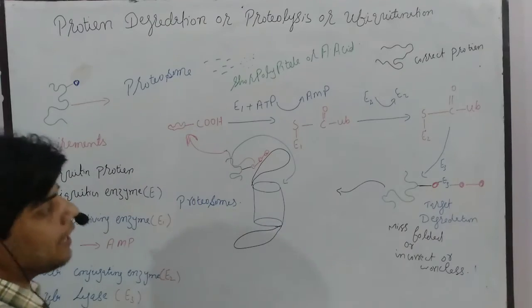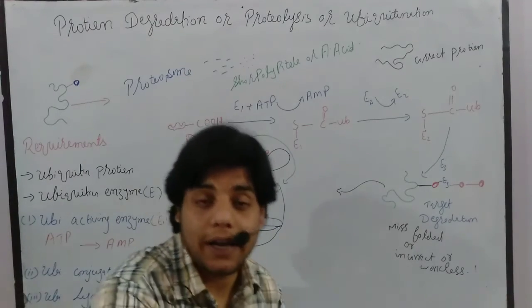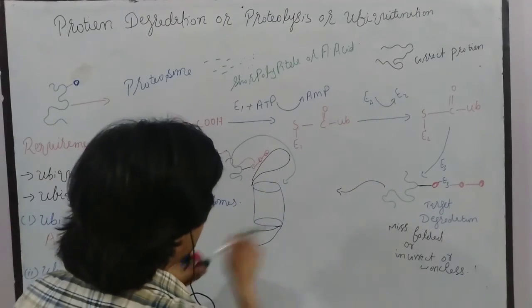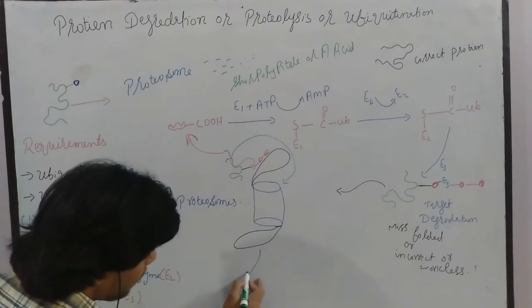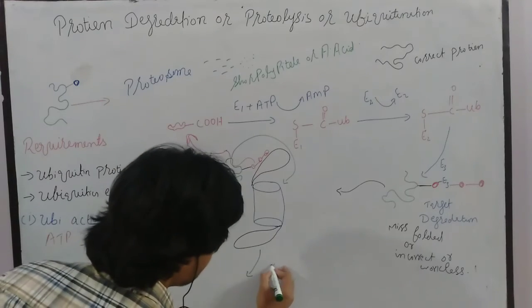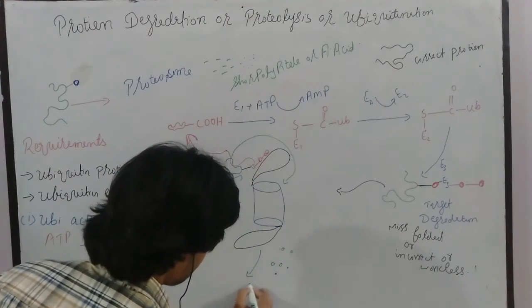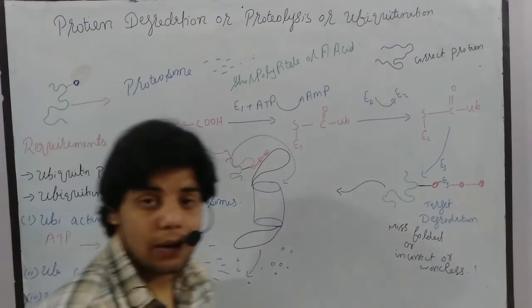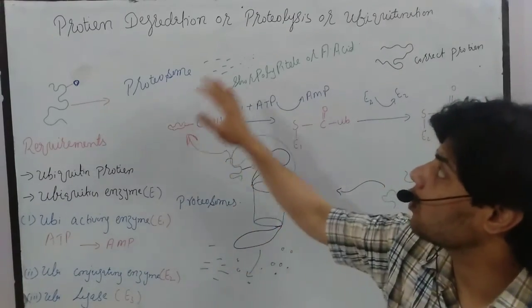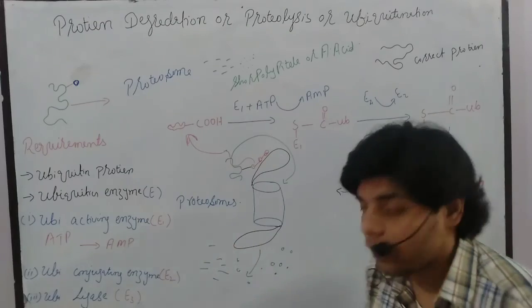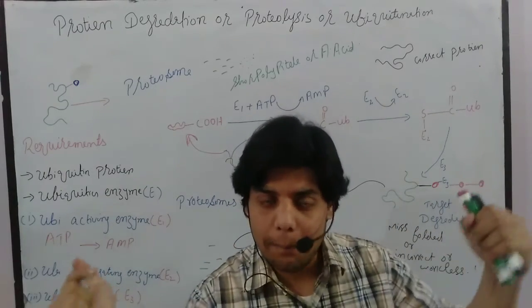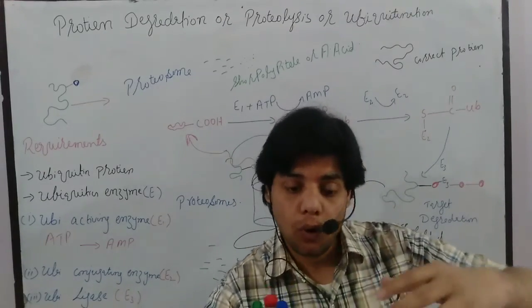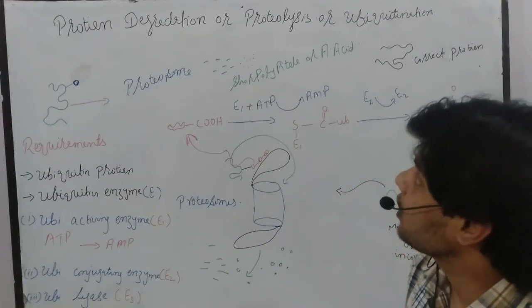Once dissociated, the ubiquitin is recycled and used for another misfolded protein. The internalized misfolded protein is then degraded inside the proteasome into small amino acids or short polypeptide chains. This is called protein degradation or proteolysis. Afterwards, the amino acids are correctly connected to each other to make a correct protein, which in the future will be correctly folded.